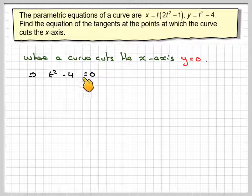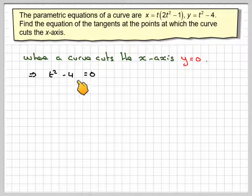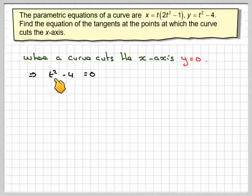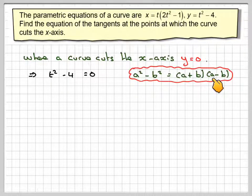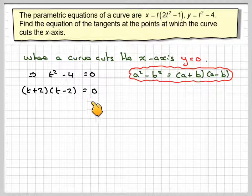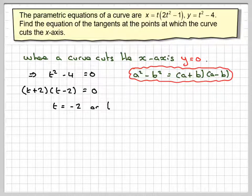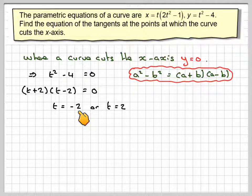If we take our y, which is t squared minus 4, and put it equal to 0, we can solve this because the difference of two squares is (a plus b)(a minus b). Factorizing this, we get (t plus 2)(t minus 2) equals 0, which gives two values: t equals minus 2, and t equals 2.